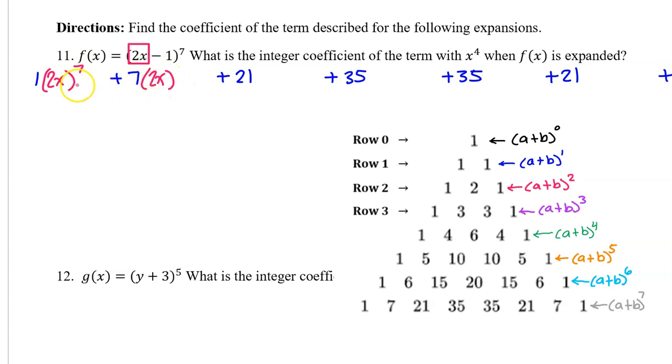So this will be 2x to the sixth power, 2x to the fifth power, and 2x to the fourth power. Since we are being asked for the coefficient of the term that has x to the fourth power in it, I know that this will be the term to look at. So I don't really need to keep going, but I will this time.